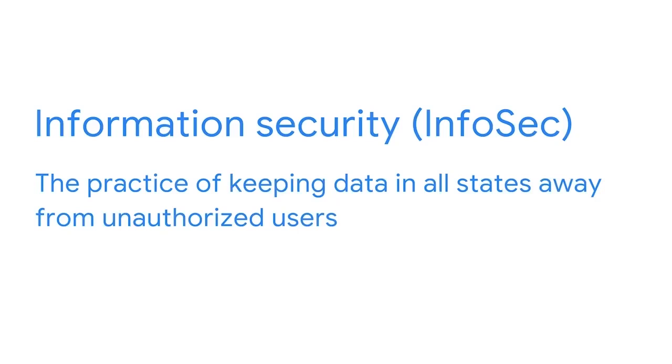Now that we understand these states of data, let's connect this back to asset management. Information is one of the most valuable assets that companies can have. Information security, or InfoSec, is the practice of keeping data in all states away from unauthorized users. Weak information security is a serious problem — it can lead to identity theft, financial loss, and reputational damage. These events have the potential to harm organizations, their partners, and their customers. As our digital world continually changes, we are adapting our understanding of data at rest. Physical devices like smartphones more commonly store data in the cloud, meaning information isn't necessarily at rest just because a phone is resting on a table.